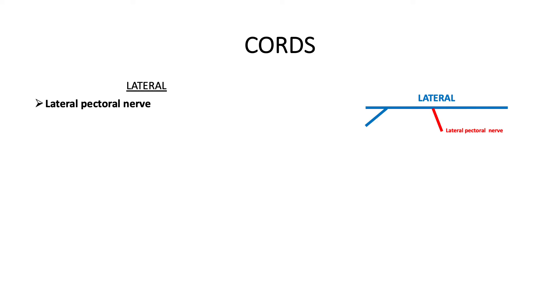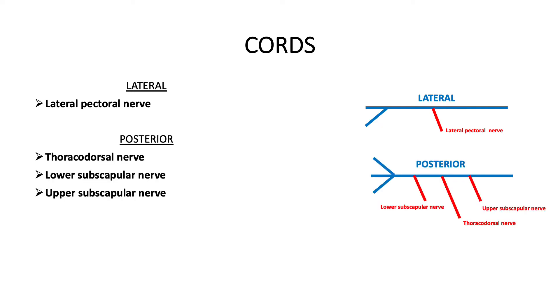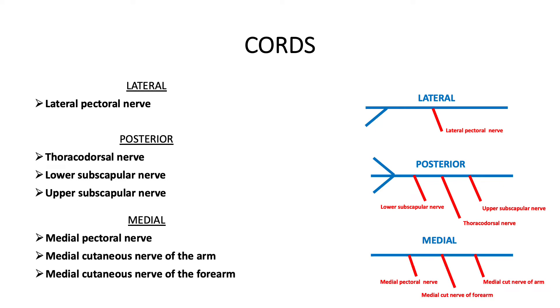At the cords there are several nerves which branch out, and these are important to know. From the lateral cord there is one nerve: the lateral pectoral nerve. From the posterior cord there are three nerves: the thoracodorsal, the lower subscapular nerve, and the upper subscapular nerve. From the medial cord there are also three nerves: the medial pectoral nerve, the medial cutaneous nerve of the arm, and the medial cutaneous nerve of the forearm.